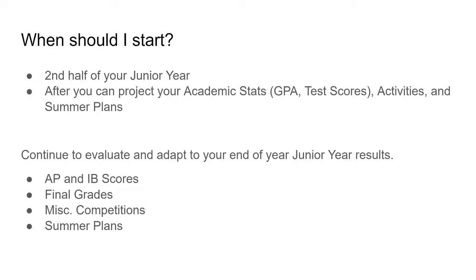There's a caveat to starting too early because we don't have enough of your academic and extracurricular data manifested to gauge and pinpoint where you'd go. But second semester junior year you should be able to project what you'll end up with. You want to continue to evaluate and adapt your college list — your AP scores won't be coming out until July, and AP scores are pretty significant. You'd also have a better understanding of what you do for the summer and how that relates to your supplemental essays.